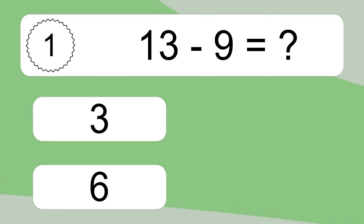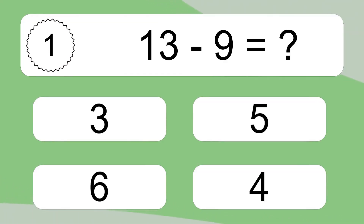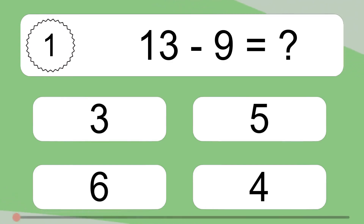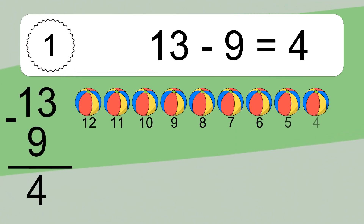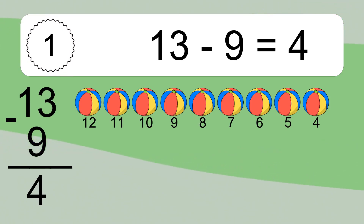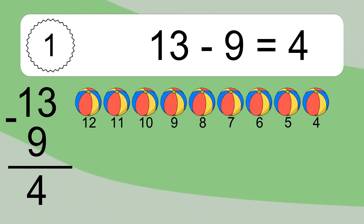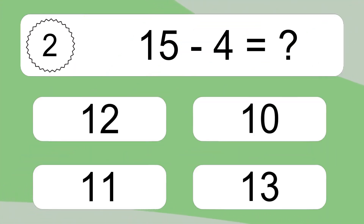13 minus 9 equals what? 13 minus 9 equals 4. Let's count it: 12, 11, 10, 9, 8, 7, 6, 5, 4.